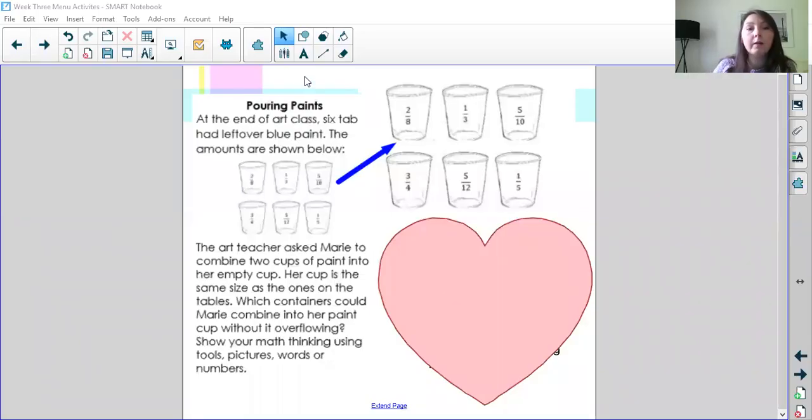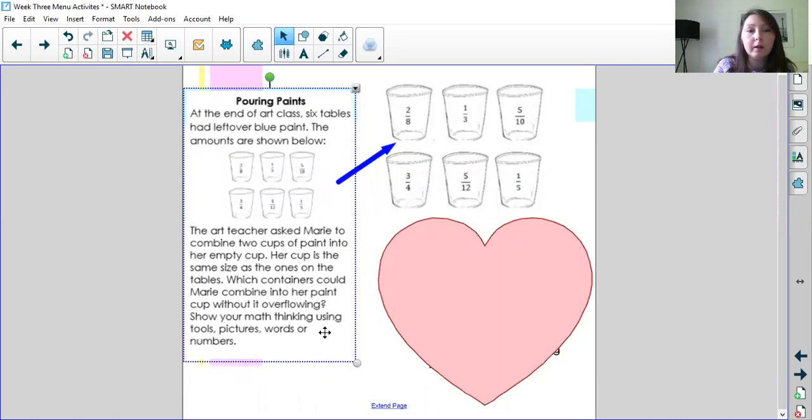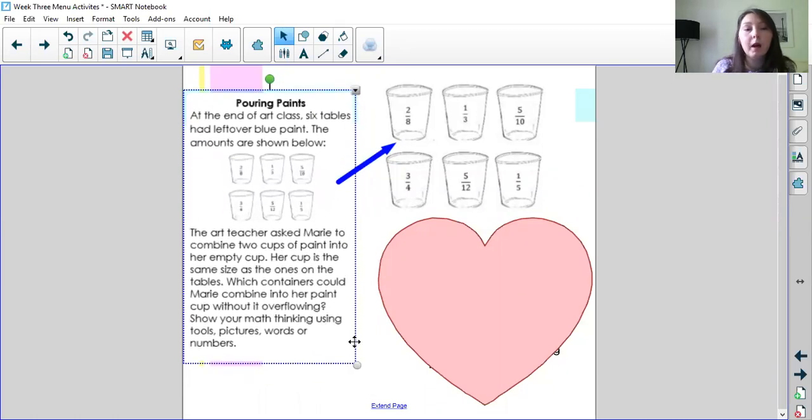Pouring Paints. At the end of art class, six tables had leftover blue paint. The amounts are shown below, and this picture I just went ahead and put over here, made it a little bit bigger so that you'll be able to see the fractions on the video.